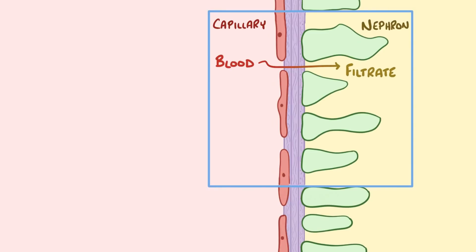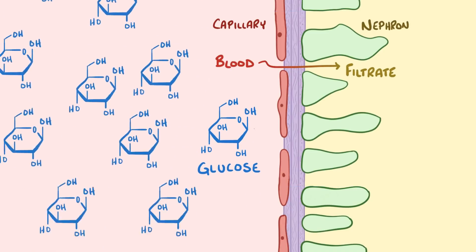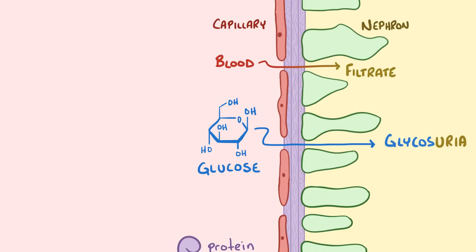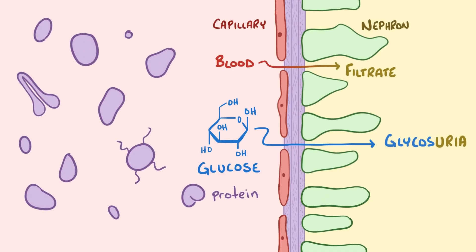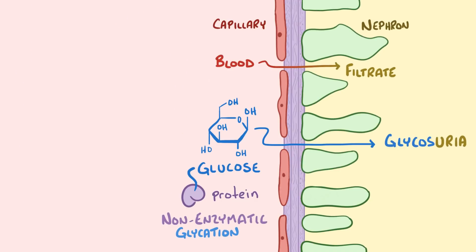In diabetes mellitus, there's an excess of glucose in the blood because it can't get into cells, and when blood gets filtered through the kidneys, some of that excess glucose starts to spill into the urine, called glycosuria. In addition, when there's a lot of glucose in the blood, it starts sticking to proteins, a process called non-enzymatic glycation because no enzymes are involved.